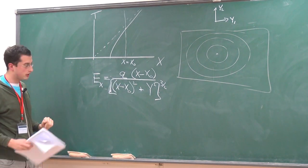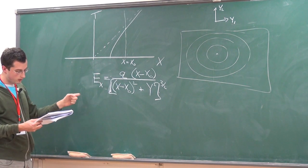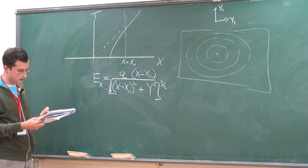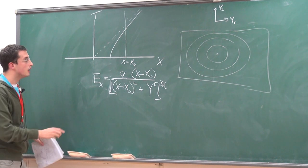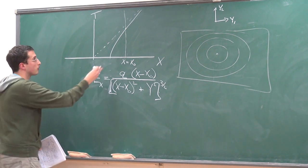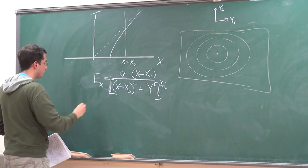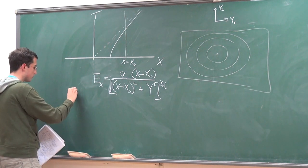Here's the electric field, and we're going to identify this as the surface charge. Now I'm going to translate this into Rindler coordinates.